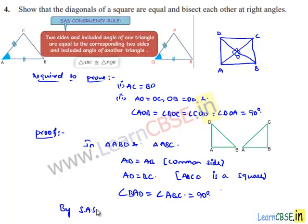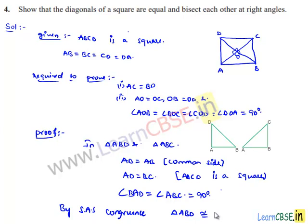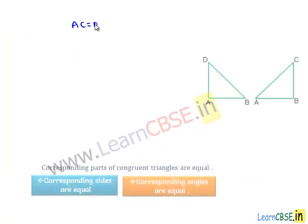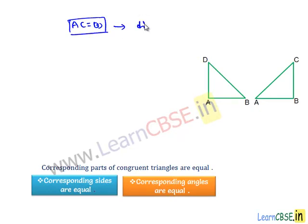By the SAS congruence rule, we can say triangle ABD is congruent to triangle ABC. We know that when two triangles are congruent, their corresponding sides and corresponding angles will be equal. Therefore, we can equate the corresponding sides: AC is equal to BD. This covers our first proof that the diagonals of a square are equal.